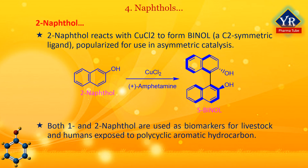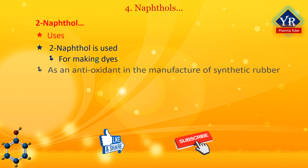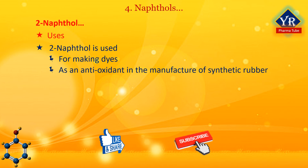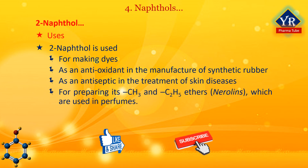Naphthols, both the 1- and 2-isomers, are used as biomarkers for livestock and humans exposed to polycyclic aromatic hydrocarbons. Uses of 2-naphthol: it is used for making dyes, as an antioxidant in the manufacture of synthetic rubber, as an antiseptic in the treatment of skin diseases, and for preparing its methyl and ethyl ethers, i.e. nerolins, which are extensively used in perfumery.